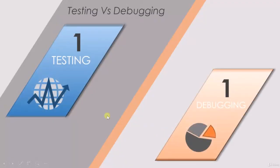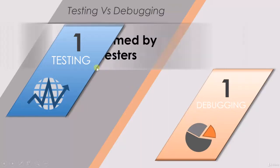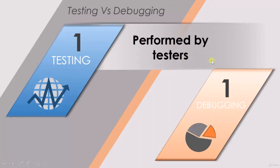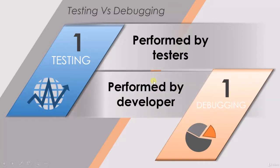The first difference between testing and debugging is that testing is performed by the testers. This is a very clear point — and debugging is performed by the developers. Testing is performed by the tester and debugging is performed by the developers.